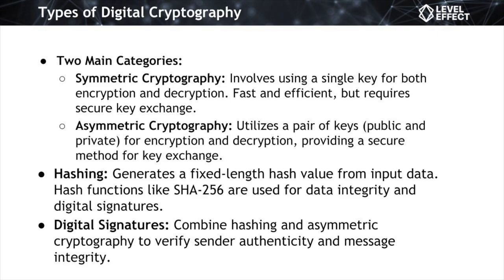Asymmetric cryptography employs a pair of keys: a public key for encryption and a private key for decryption. The public key can be openly shared with anyone, while the private key remains confidential. This innovation solved the secure key exchange problem present in symmetric cryptography. While asymmetric encryption is relatively slower due to operational complexity, its strength lies in establishing secure communication channels and verifying the authenticity of messages.